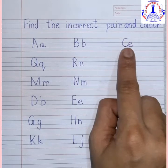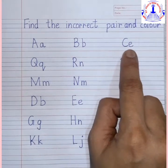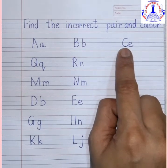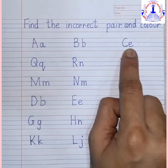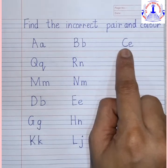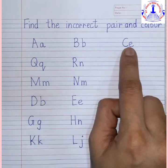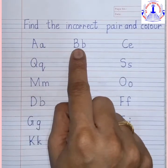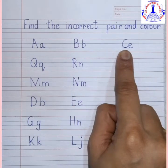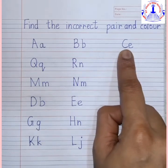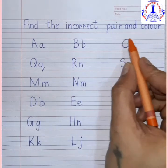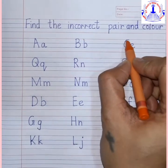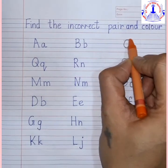Here capital C and small e — capital C and small c should come, but here it is capital C and small e. So this is not the correct pair, this is an incorrect pair. This is a correct pair, this is a correct pair, but here C with e is an incorrect pair. So what are we going to do? We will color the incorrect pair.